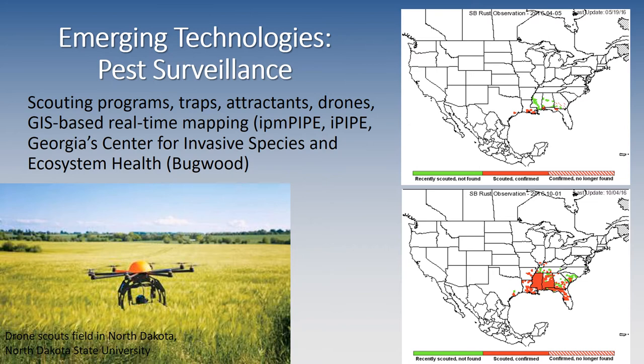We've looked at a number of emerging technologies. Pest surveillance is going to play a critical role as we move forward, including scouting, traps, attractants, and drones. Here we have a drone scouting a field in North Dakota. The use of GIS-based real-time mapping has been very useful — a couple of examples would be the IPM Pipe and Georgia's Center for Invasive Species and Ecosystem Health.